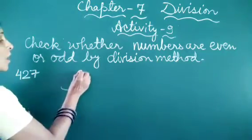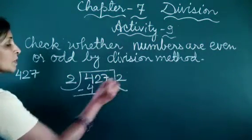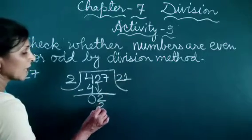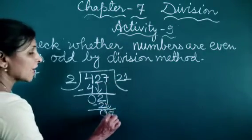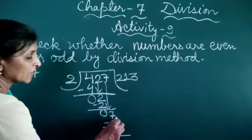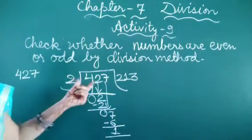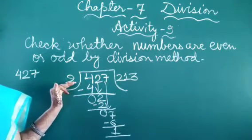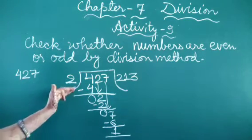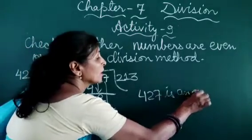427 is divided by 2. 2 times 2 are 4, subtracted — 0 comes. Bring down 2, 1 times we write 2, subtracted — 0 comes. Bring down 7. 3 times — 2 twos are 6, subtracted — remainder is 1. When we divide 427 by 2, we get 1 as the remainder. Thus 427 is an odd number.